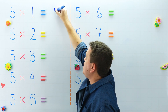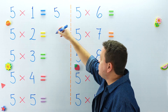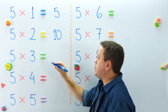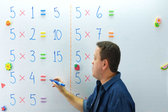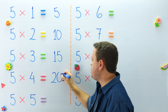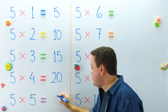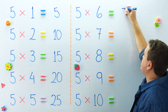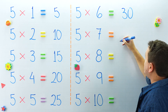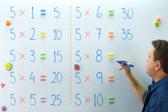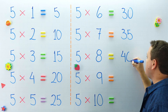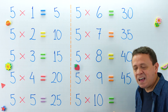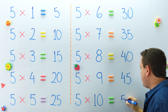Our next table is the 5 times table. 5 times 1 equals 5, and 5 times 2 equals 10. What about 5 times 3? Well, 5 times 3 equals 15. And 5 times 4 equals 20. 5 times 5 is equal to 25 — I love this multiplication table! Over here, 5 times 6 equals 30. And 5 times 7 equals 35. 5 times 8 equals 40. And 5 times 9 is equal to 45. And last but not least, 5 times 10 equals 50.